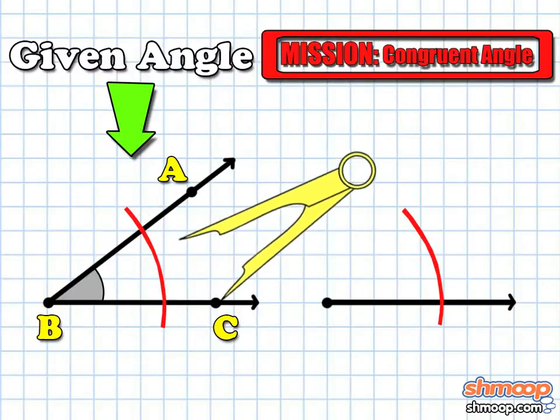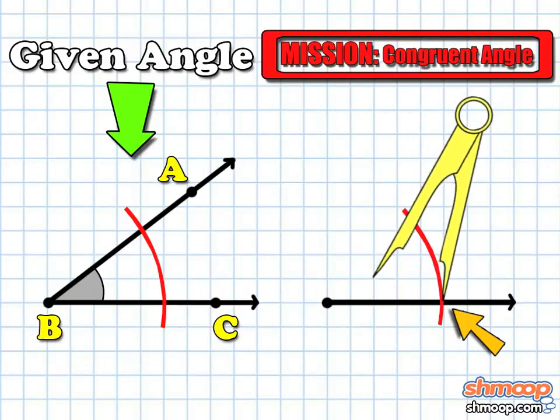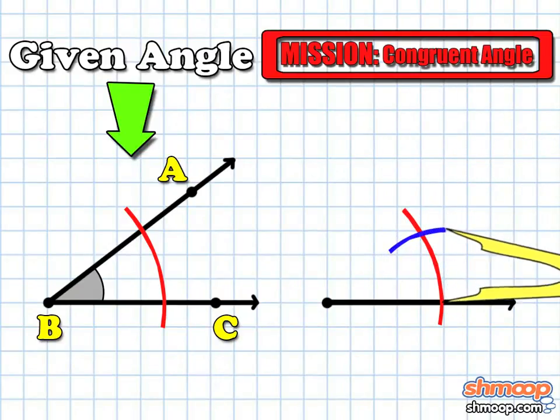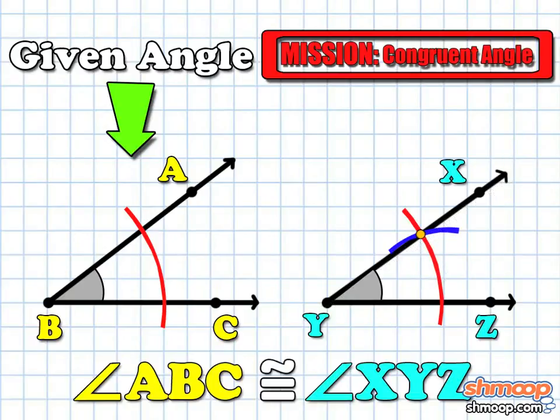If we take this distance and apply it to the intersection between the arc and the ray, we can draw a small arc that intersects with the first one. Two points are enough to draw another ray from the endpoint of the angle through the point where the two arcs intersect. And there you have it, a congruent angle, constructed using only a pencil, a straight edge, and a compass.